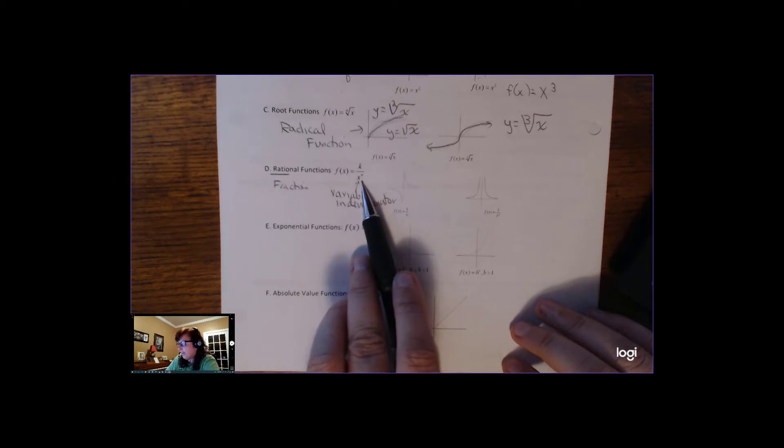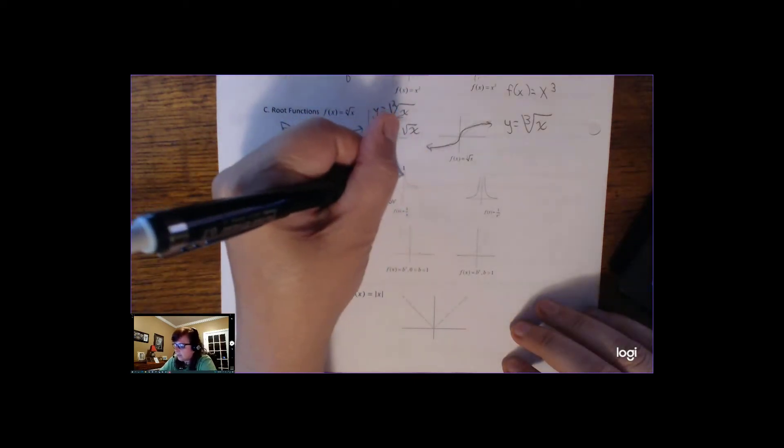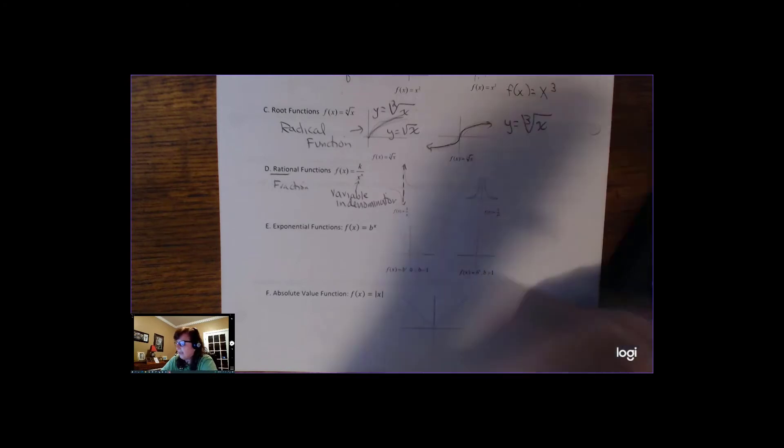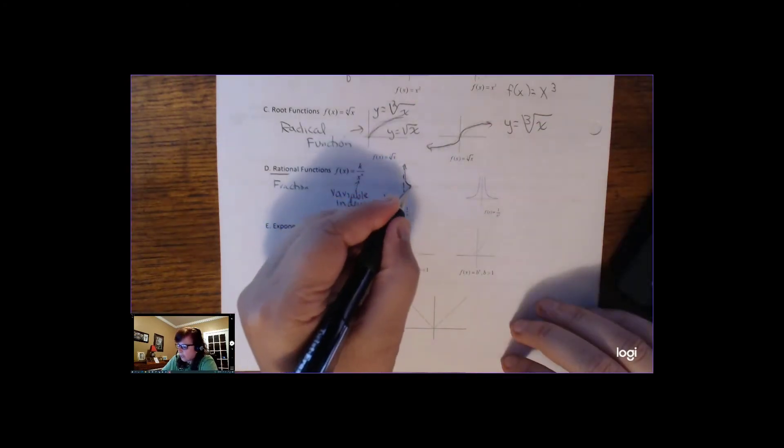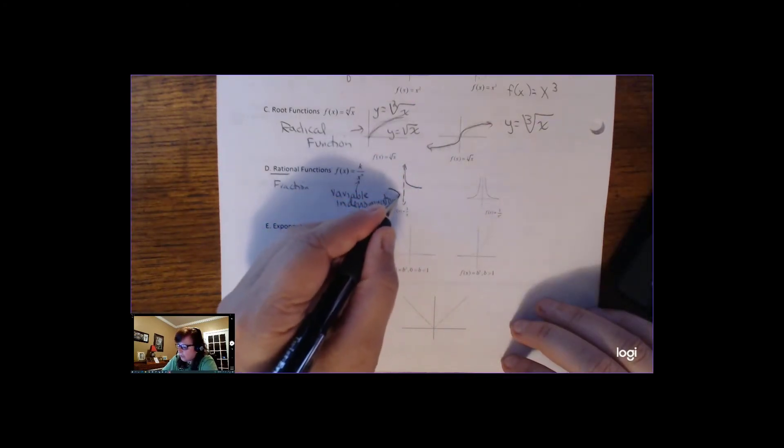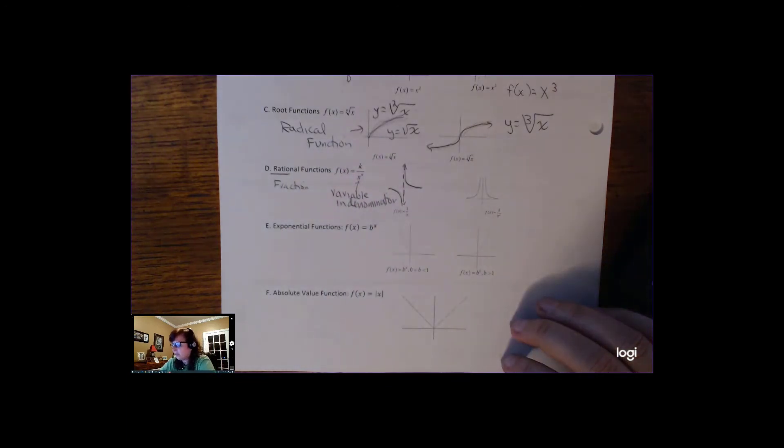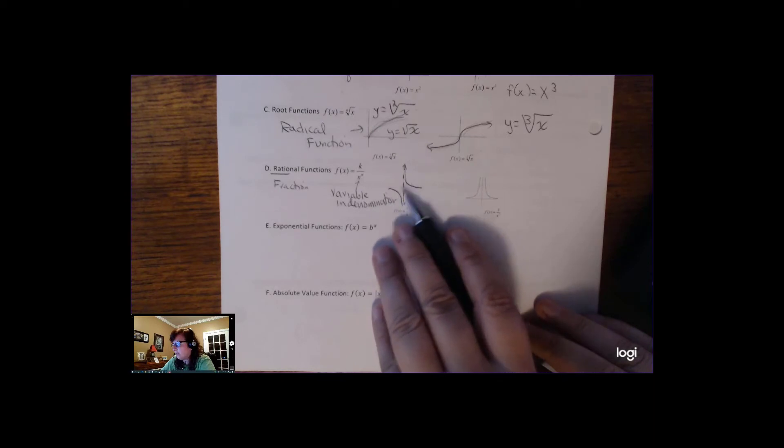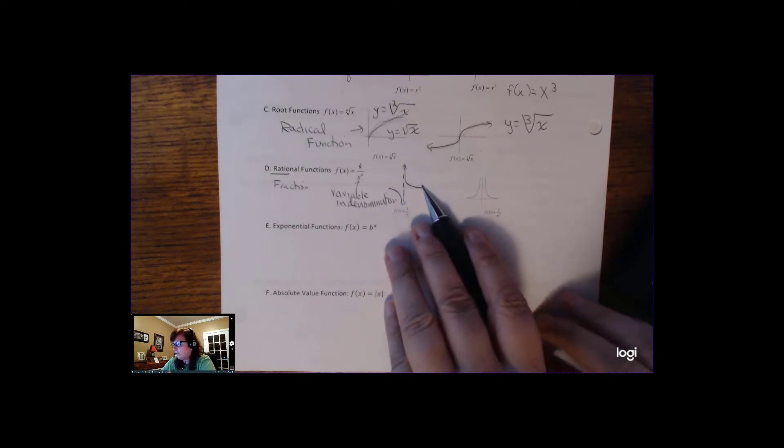So when you're talking about domain, x cannot be 0. And so it creates this asymptote, this line that isn't really part of the graph, and it's going to create these branches that are going to get really close to x equals 0, but never be able to touch it. So rational functions have these asymptotes in it, these branches. You have to pick up your pencil to graph them.